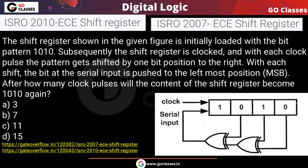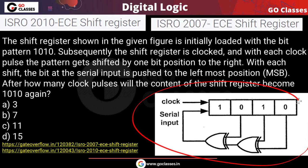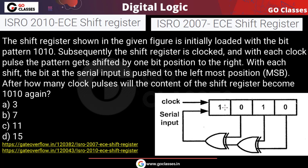Let's solve this question - this is an ISRO 2010 and also ISRO 2007 question. In this question, a circuit is given which is a shift register, and the initial content of the shift register is 1010.